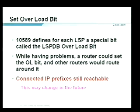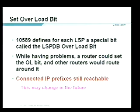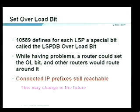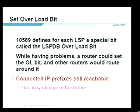While the router is still coming up and learning routes, directly connected IP prefixes are still reachable. However, with MPLS traffic engineering tunnels, if a TE tunnel stays up because the loopback is reachable but downstream destinations are not, traffic gets black-holed. So even directly connected IP prefixes shouldn't be reachable when the overload bit is set in an MPLS TE application.